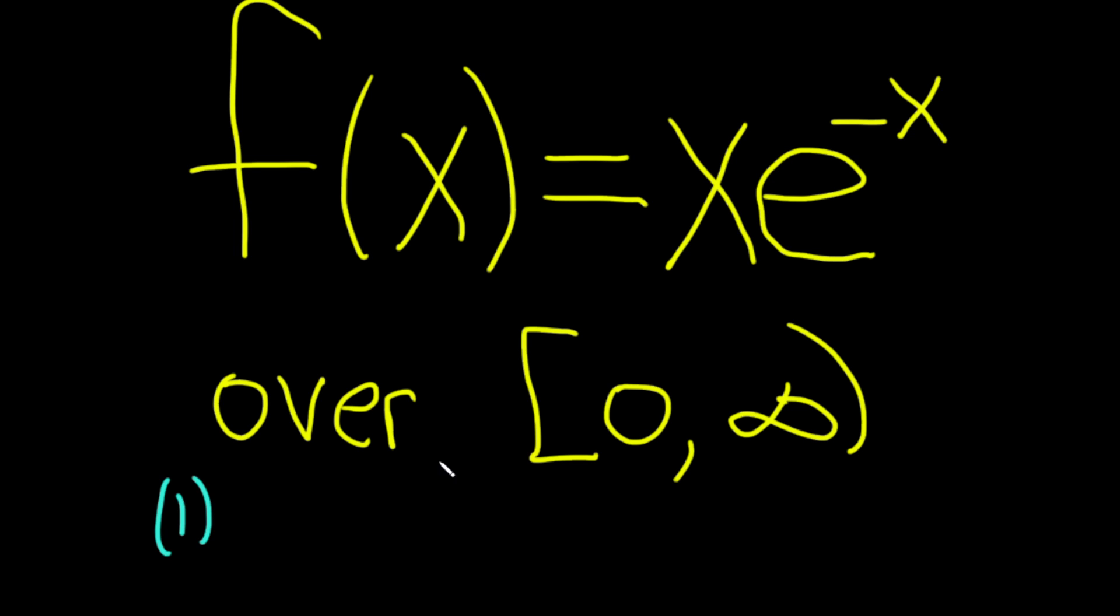So the first thing is that f is continuous. There's no issues here. This is a continuous function on this interval. It could be continuous everywhere except at possibly a finite number of points. But in our case, it's the product of continuous functions, so it's continuous, certainly continuous everywhere in this interval.